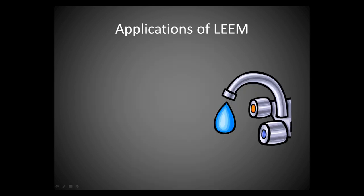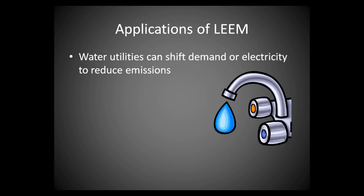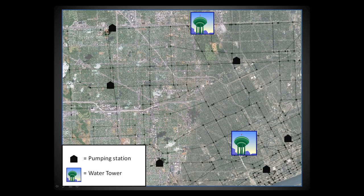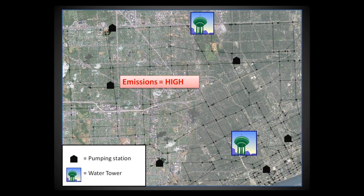Water distribution systems can also use LEAM to reduce emissions. Electricity is used to pump water to customers. Like other electric consumers, water distribution systems could shift some of their electricity uses in time. For example, when emission rates are low, water could be pumped into elevated storage. Then, during times when emission rates are high, gravity can be used to deliver water to customers instead of using electricity for pumping.